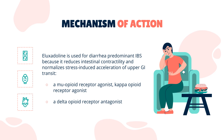Mechanism of action. Eluxatiline is a mu-opioid receptor agonist, kappa opioid receptor agonist, and a delta opioid receptor antagonist. It is used for diarrhea-predominant IBS because it reduces intestinal contractility and normalizes stress-induced acceleration of upper GI transmission. Antagonistic activity at the delta receptor minimizes the constipating effect usually seen with mu-opioid receptor agonists alone.